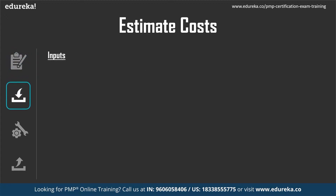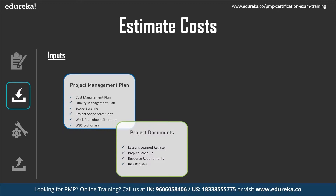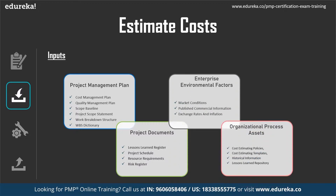Inputs to the estimate cost process include the project management plan (cost management plan, quality management plan, scope baseline, project scope statement, work breakdown structure, WBS dictionary), project documents (lessons learned register, project schedule, resource requirements, risk register), enterprise environmental factors, and organizational process assets.